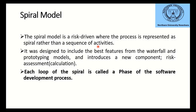The spiral model was designed to include the best features from the waterfall model and the prototyping model. From the waterfall model, the best feature is that you must complete one phase before going to the next. The main disadvantage of the waterfall model was that you could not accommodate change, but in the spiral model you can evaluate and modify changes in every phase.